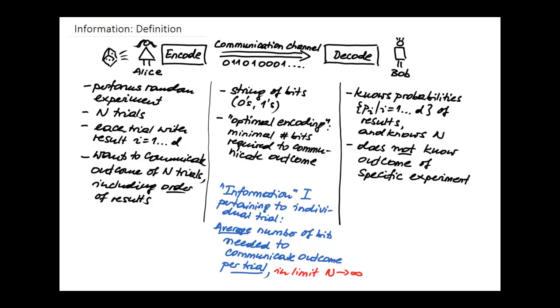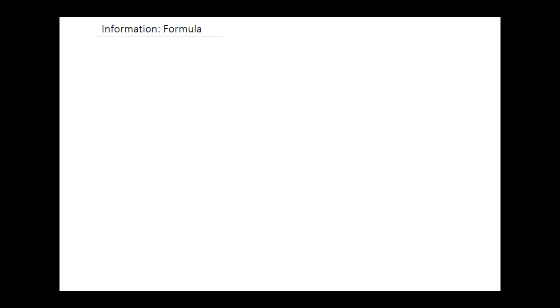It's an idealized situation where one measures information by counting the average number of bits needed to store or communicate a message. I won't give the full proof — it will be touched upon in one of the next problem sets — but I want to motivate the general formula for the information with some heuristic arguments. So let's look at a few special cases.